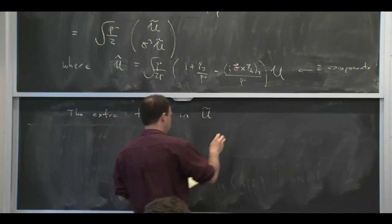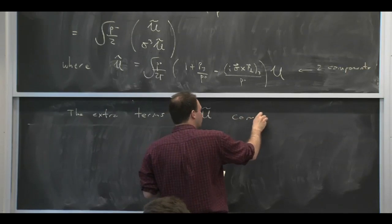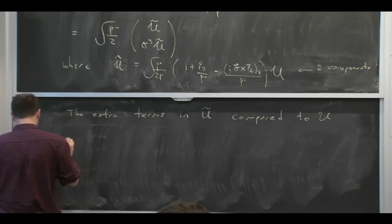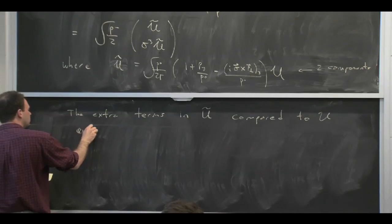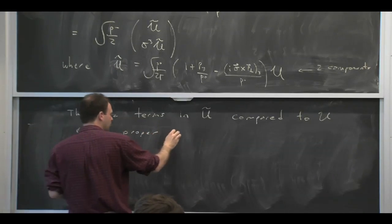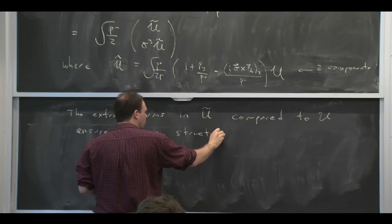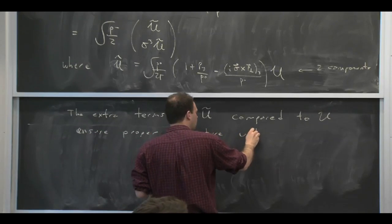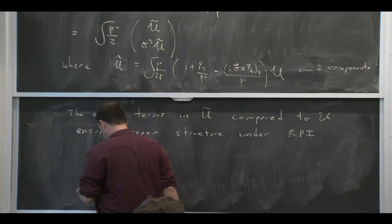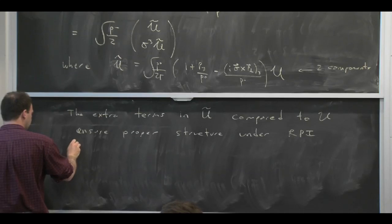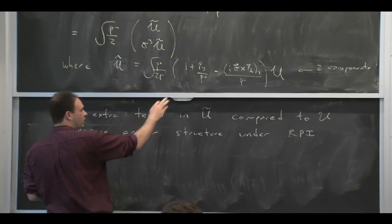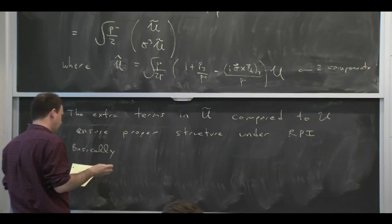That actually has to do with this reparameterization invariance, so it'll become clear when we talk about that. But these extra terms in U, relative to those for the other guy, the simple U, actually insert the proper structure under reparameterizations. And basically, it'll become clear in a moment.